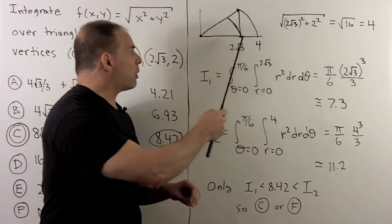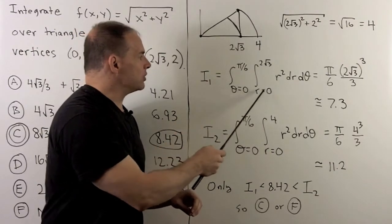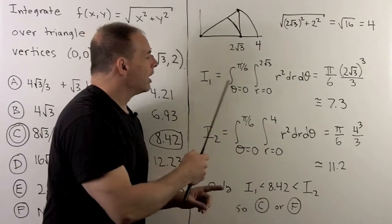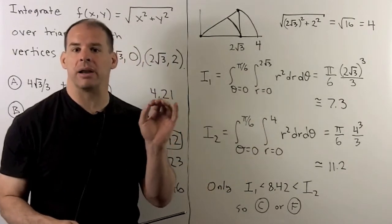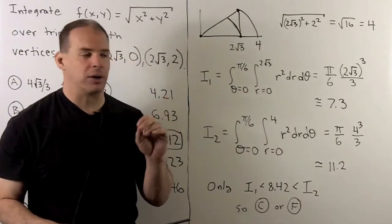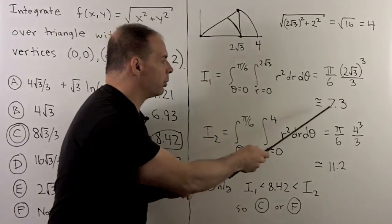For our integral over the smaller wedge, we have r going from zero to 2√3. When I work that out, I get π over six, 2√3 cubed, divided by three. Put that into a calculator, and we get roughly 7.3.